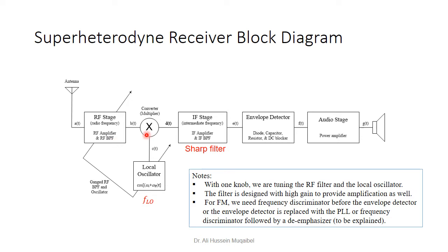Once the signal is filtered and amplified, it is multiplied with a local carrier — this multiplication performs frequency translation via a mixer. The mixer shifts the radio frequency to the intermediate frequency. The local oscillator must be selected so the resulting frequency is the IF, 455 kHz. We then have the signal of interest at a new carrier frequency, and envelope detection can be applied for AM demodulation.